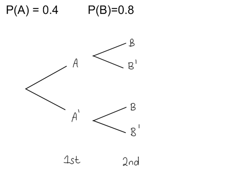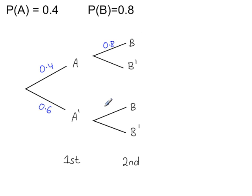Mark the probabilities on the branches. So the probability that A happens is 0.4, which means the probability A does not happen will be 1 minus this, 0.6. The probability B happens is 0.8, and the probability B does not happen will be 0.2.